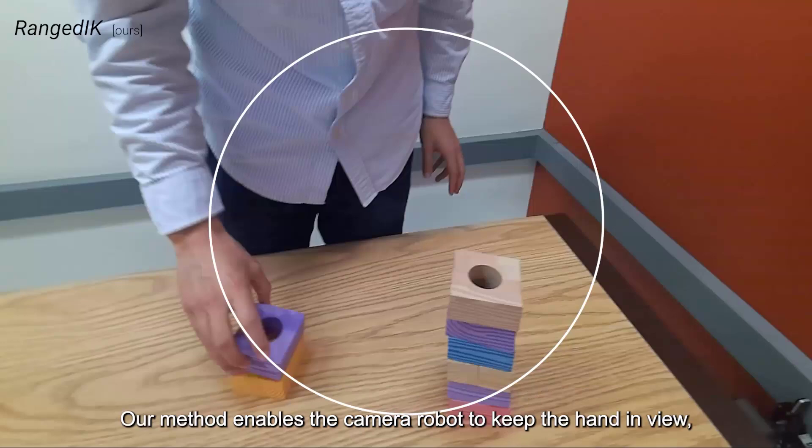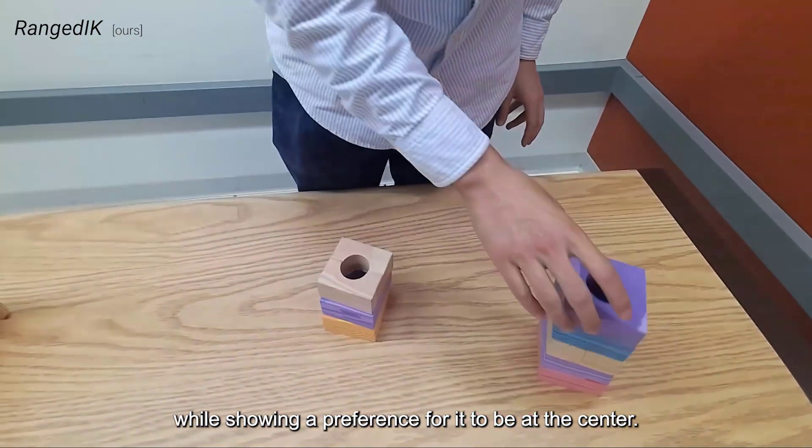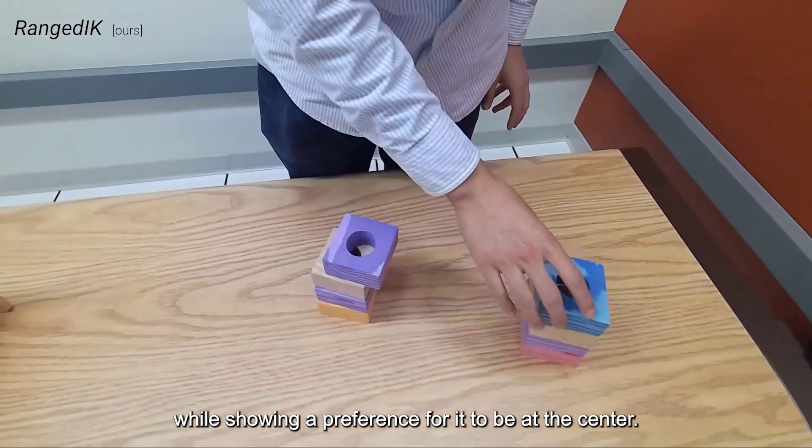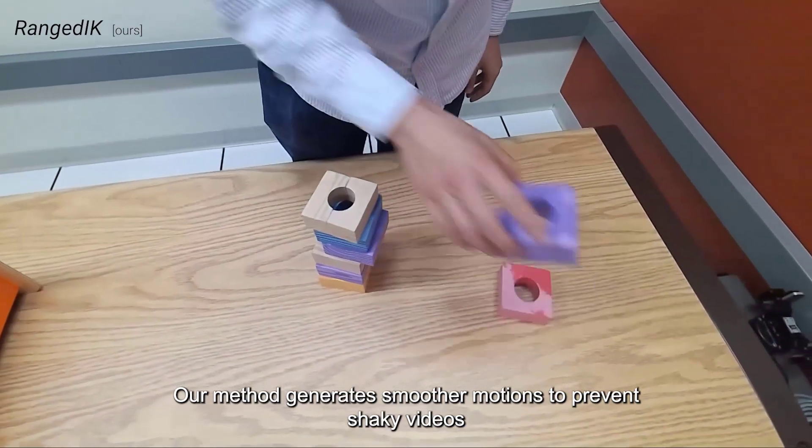Our method enables the camera-in-hand robot to keep the hand in view while showing a preference for it to be at the center. Our method generates smoother motions to prevent shaky videos.